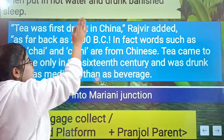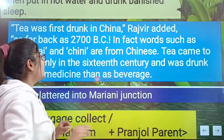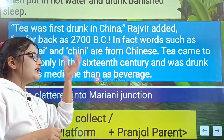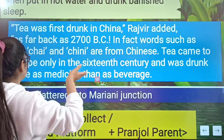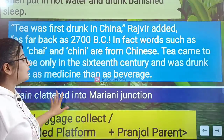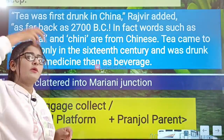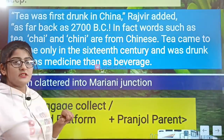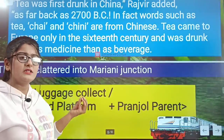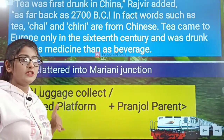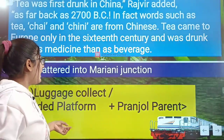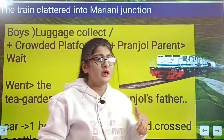Rajveer tells us some facts about tea. First, tea was first drunk in China — even as far back as 2700 BC. The words like 'Chai' and 'Chini' are derived from Chinese words. Rajveer also tells us that tea came to Europe in the 16th century. In that first time, tea was used as medicine rather than as a beverage, unlike today when we drink it as a beverage.